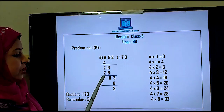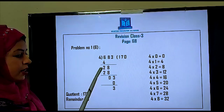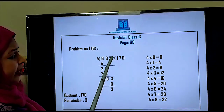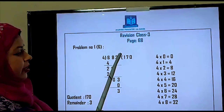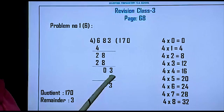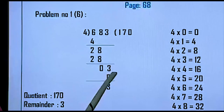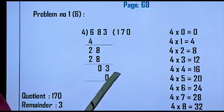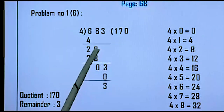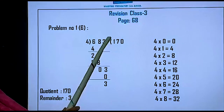Now do the subtraction again: 28 minus 28 equals 0. We have one number left in the dividend. I have to bring down 3. But this 3 is not the remainder — because we know the remainder comes after doing the subtraction, and after doing the subtraction we got zero here. So I am now bringing down the 3.